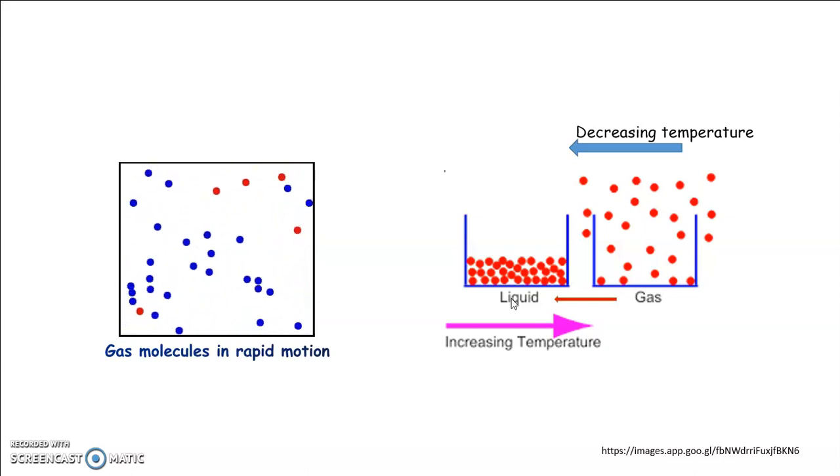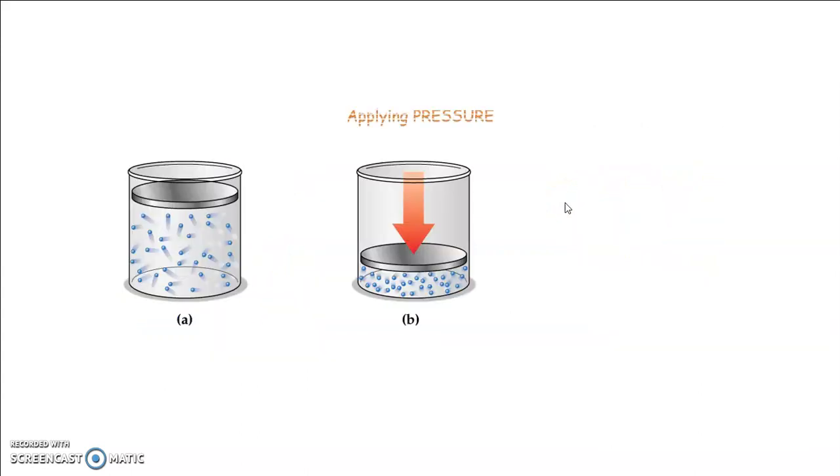Thus, liquefaction of gases results from a decrease of temperature. Increase of pressure also has the effect of bringing gaseous molecules closer and closer to one another due to decrease in volume. This is an additional helpful factor in converting air into liquid. Thus, increase of pressure and decrease of temperature both tend to cause liquefaction of gases.